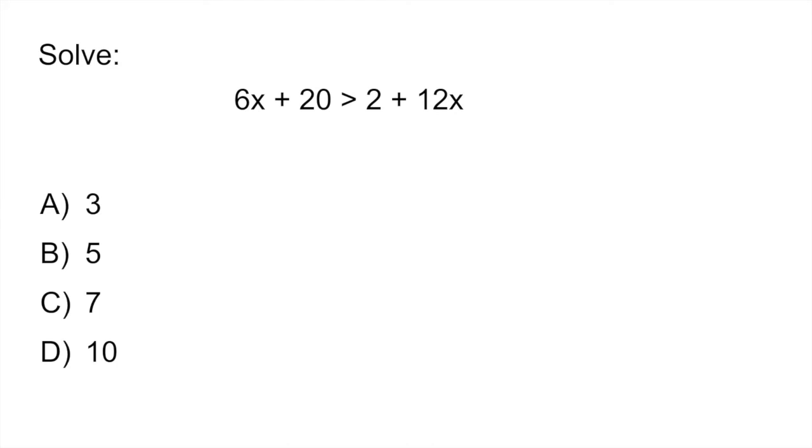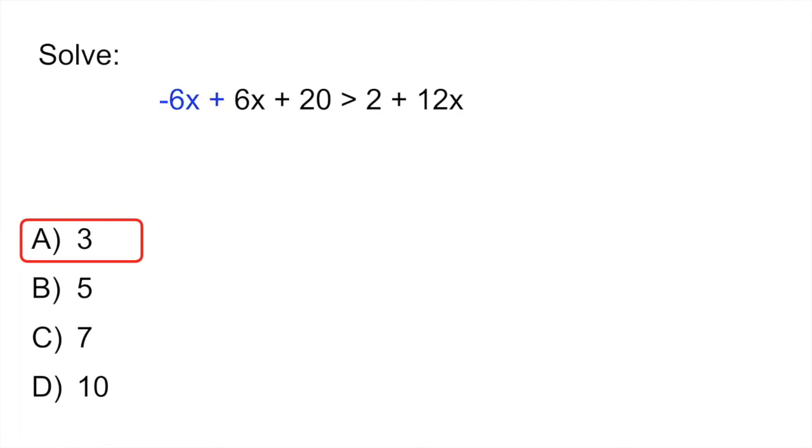So we are going to get all our x's on the right side. So in order to do that, if you look at the left side of the equation, you would subtract -6x from the left side, and you would do the same thing on the right side. The reason we're doing this, again, as we said before, is if you have -6x + 6x, that gives you 0, so you can cancel that out. So now you have 20 > 2 + 6x.